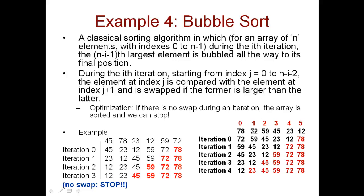We check if 78 is greater than 72. If 78 is greater than 72, we do the swapping: 72 goes here and 78 comes here. Then j is 1, j plus 1 is 2, so 78 is compared to 59 — 78 is greater than 59, so swap: 59 comes here, 78 goes here. 78 compared to 45, again swap: 45 comes here, 78 goes here. 78 compared to 23 — swap: 23 and 78 swap. 78 then compared to 12.